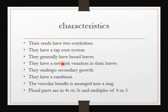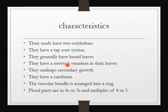In monocotyledonous plants we saw that they have parallel venation. In dicotyledonous plants we see network venation. Network means connection — the veins of the leaves of these plants are actually connected, so they form a network.